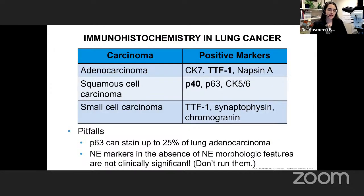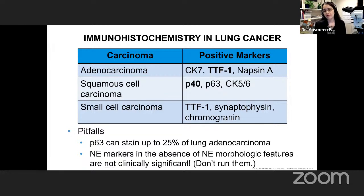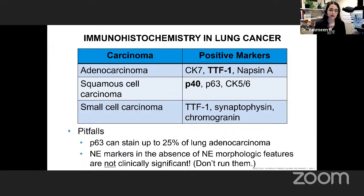IHC in lung cancer may appear on your boards. Adenocarcinoma is positive for TTF1, Napsin, and CK7. Squamous cell carcinoma is positive for P40, P63, and CK5/6. Small cell is positive for TTF1 plus neuroendocrine markers. Importantly, P63 can stain up to a quarter of lung adenocarcinomas, making it inferior for squamous in the lung. Also, neuroendocrine markers in the absence of neuroendocrine morphology are not clinically significant — so if you don't see neuroendocrine morphology, don't run neuroendocrine markers.